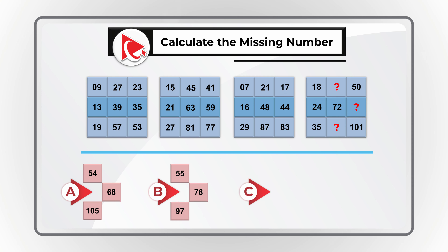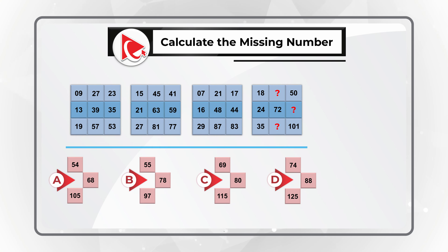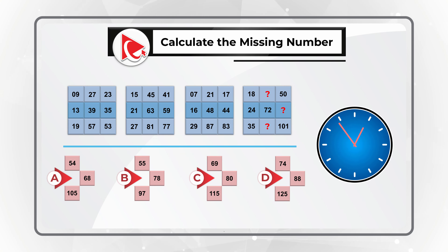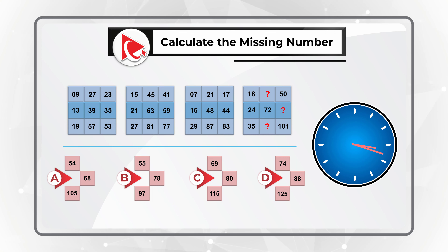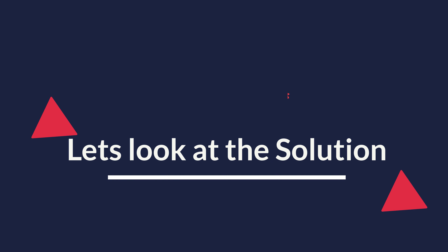Choice C is represented by the numbers 69, 80, and 115. Choice D is 74, 88, and 125. Give yourself maybe 20 to 30 seconds by pausing this video to see if you can come up with the solution. I am moving forward to reveal my version — if you have a better way to solve it, please post in comments.